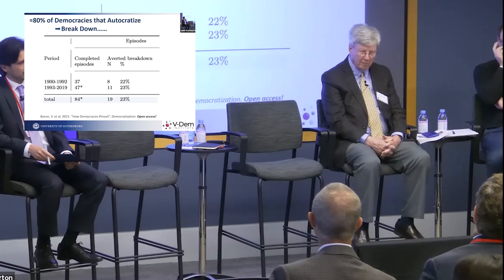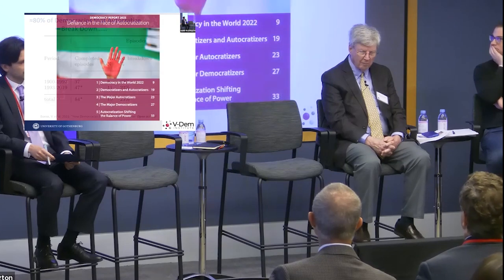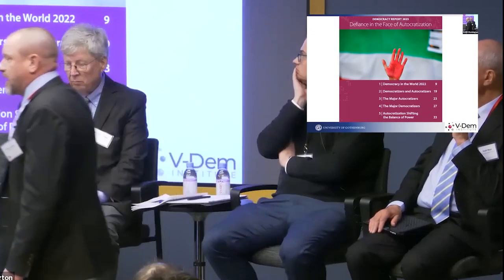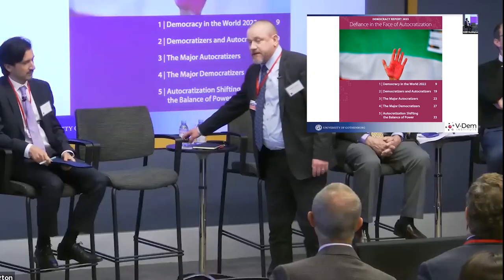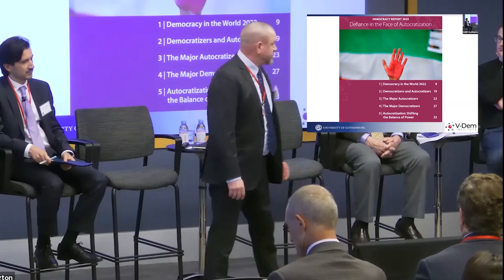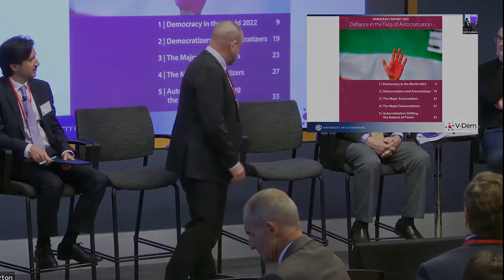The evidence is consistent across perspectives, including a 130-year view showing that almost 80 percent of countries that start as democracies and begin autocratizing see democracy die. That's from this year's democracy report: 'Defiance in the Face of Autocratization.' Thank you for inviting me and allowing me to speak — I look forward to the conversation.